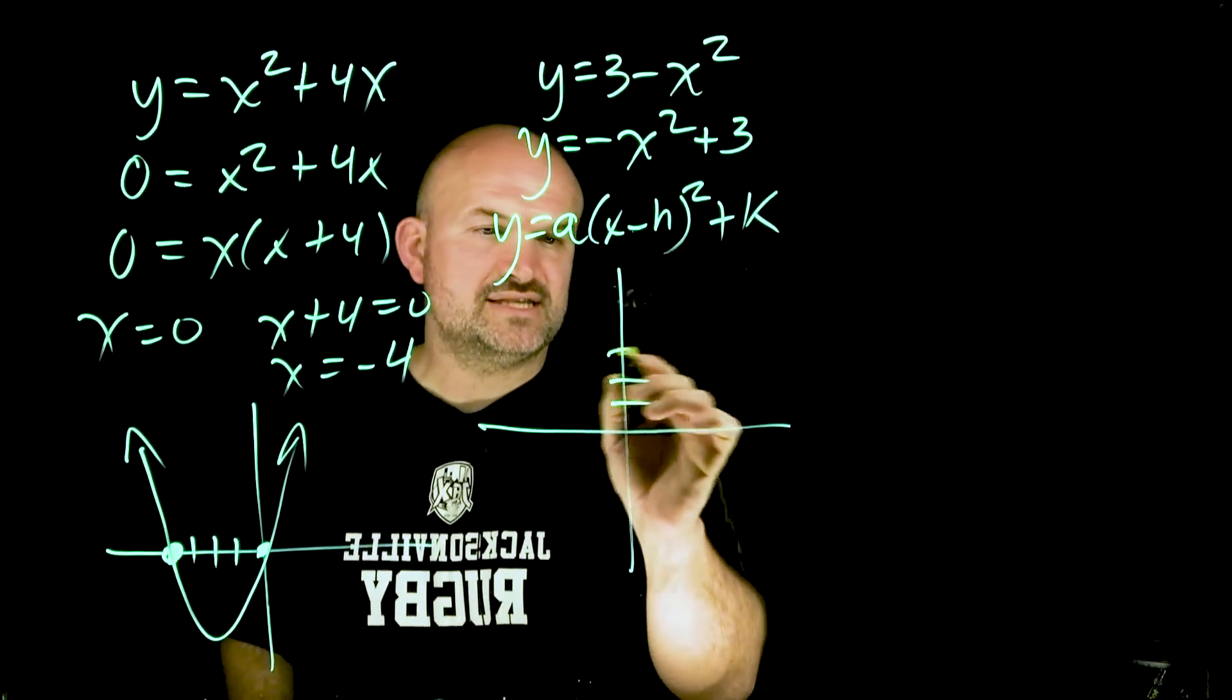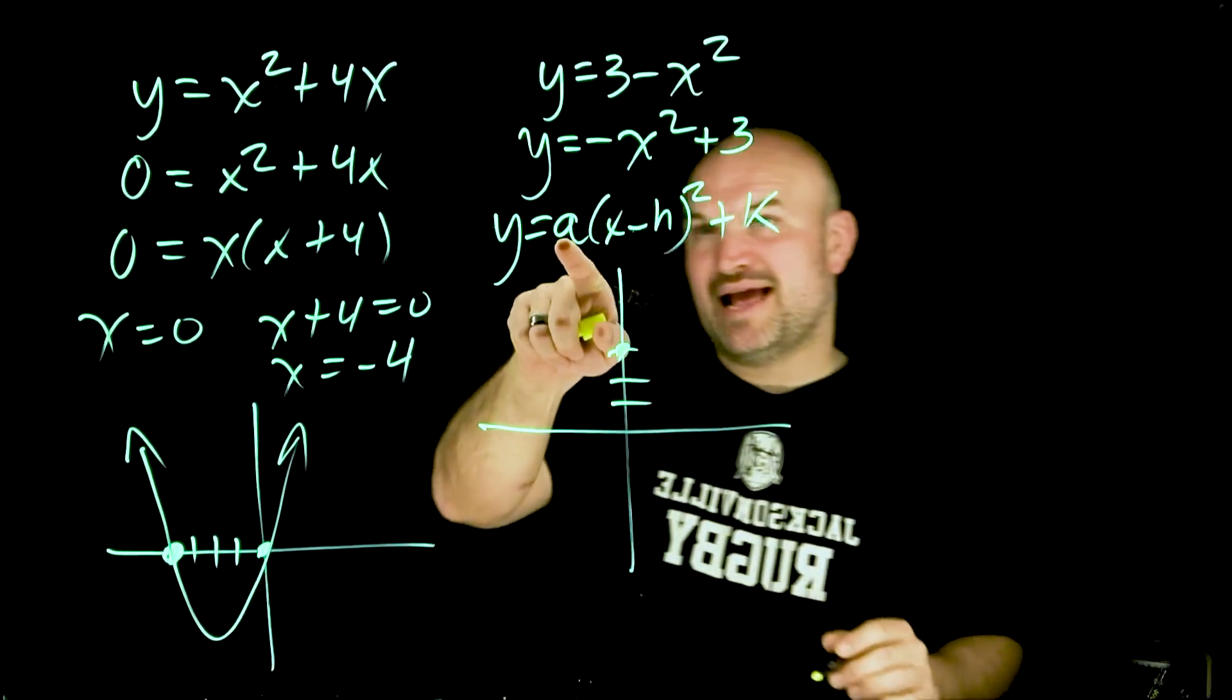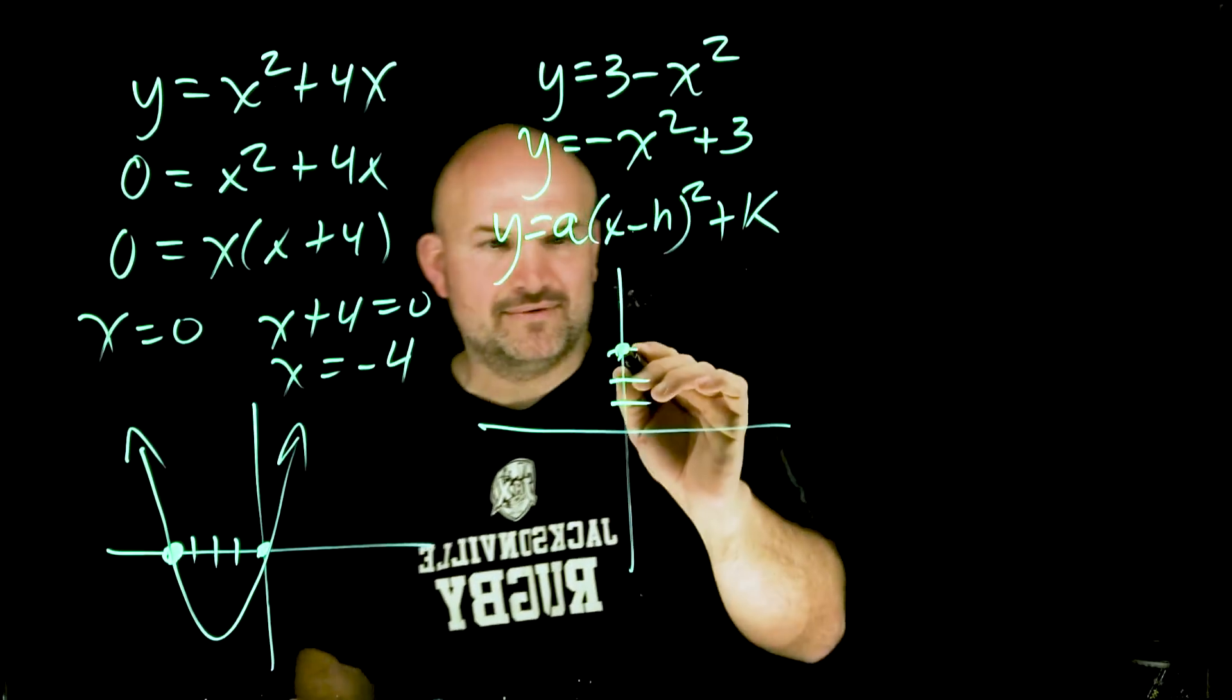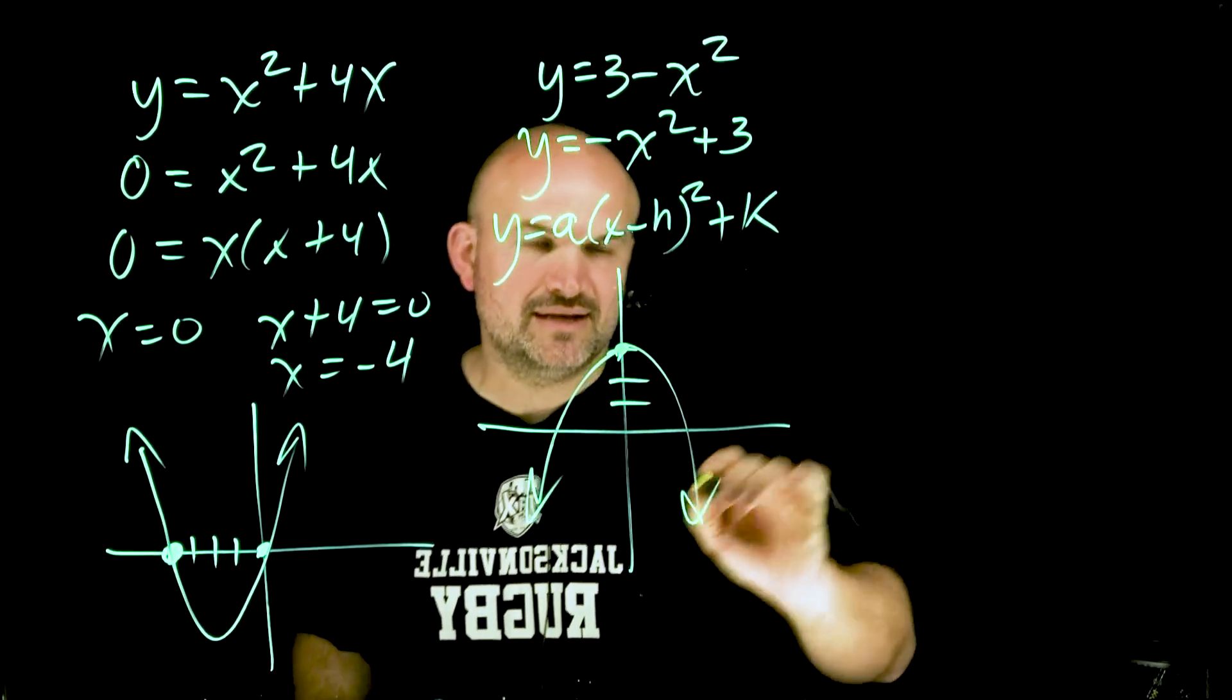However, k is going to be shifting our graph up 3. So we're going to go up 3 units. But now you can see my a is going to be negative. And like I mentioned over here, I know the graph is going to open down. So the graph is going to look something like that.